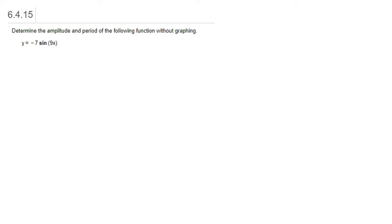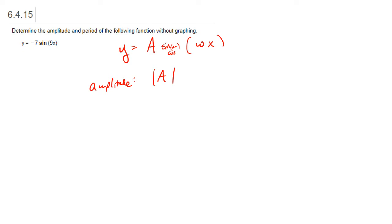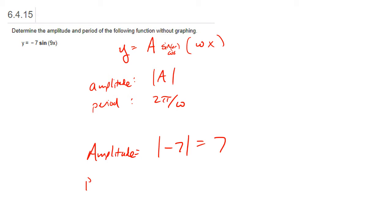Whenever we have a function given by a sine or cosine of omega times x, the amplitude is the absolute value of the number multiplied out in front, and the period is given by 2π over omega — or more precisely, 2π over the absolute value of omega.